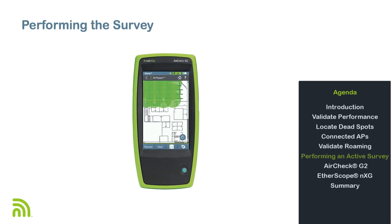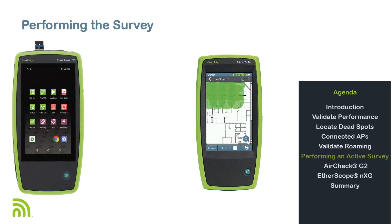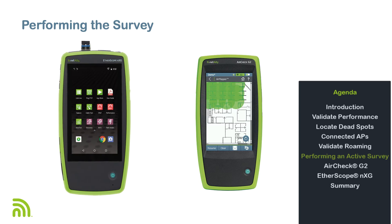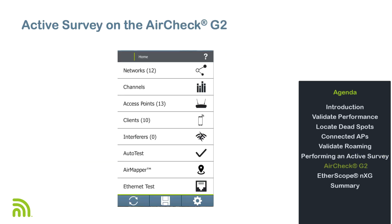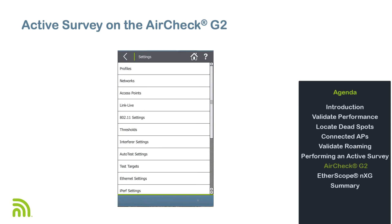Now that we've discussed the reasons for performing an active Wi-Fi survey, let's take a look at how we set up and run the active survey on both the AirCheck G2 and Etherscope NXG. As with the passive survey, the first thing to check is the 802.11 settings. This is done by tapping on the settings icon in the lower right corner of the home screen.